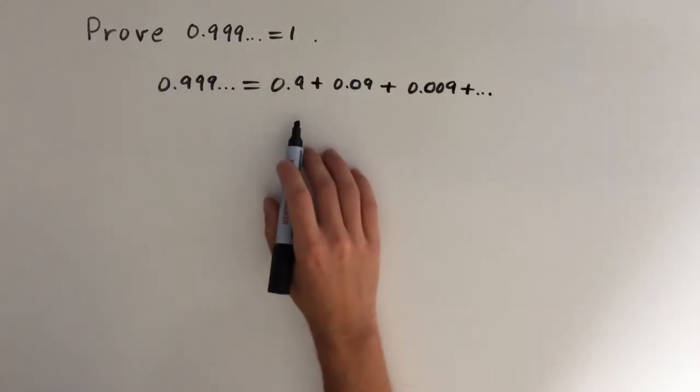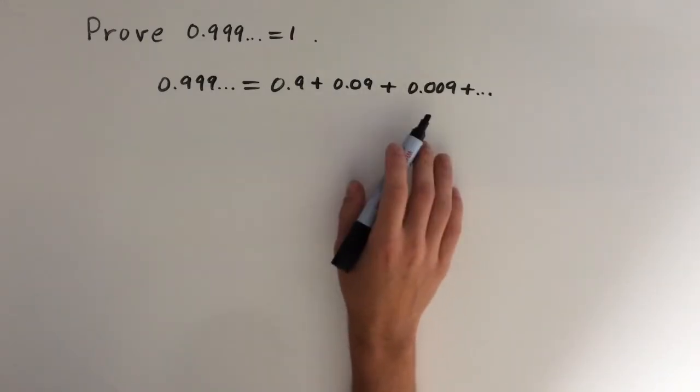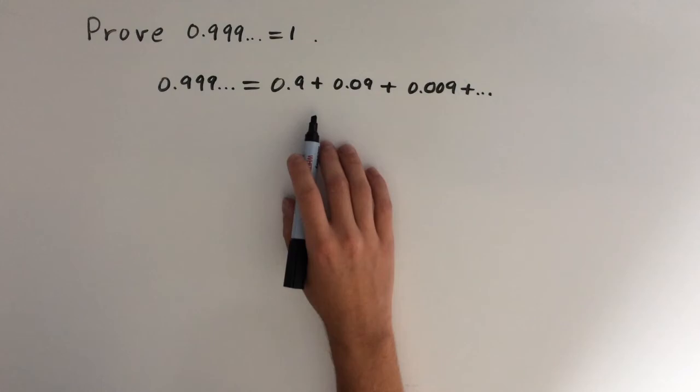And now the trick is to realize that this is a geometric series. So what we mean by this is that every successive term is being multiplied by a common ratio.